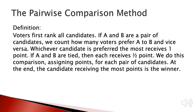The last method is the pairwise comparison method. It is defined as follows: voters first rank all candidates. For each pair of candidates A and B, we count how many voters prefer A to B and how many prefer B to A. Whichever candidate is preferred by the most voters receives one point. If A and B are tied, each receives half a point. We do this comparison for each pair of candidates, and at the end, the candidate receiving the most points is the winner.